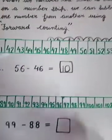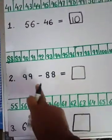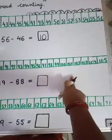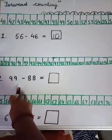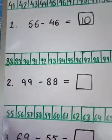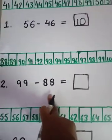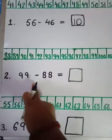Second question we'll see. Another number strip is there, 88 to 105. Suppose we subtract 99 minus 88, we subtract 88 from 99.